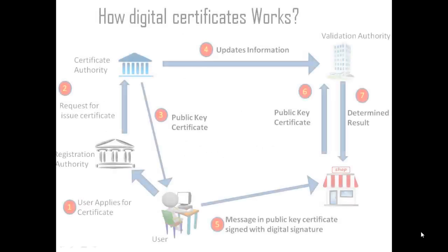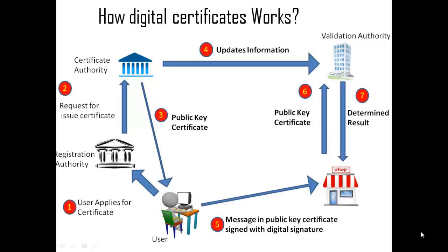Here is how a digital certificate works. First, the user applies for a certificate to the registration authority. The registration authority then requests the certificate authority to issue a certificate. The certificate authority provides the public key certificate to the user and updates the information to the validation authorities. The user then uses the certificate in electronic transactions, with all messages signed using the public key certificate. Finally, the other party — such as a shop — validates the user's certificate through the validation authorities.